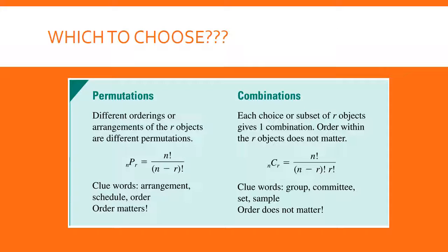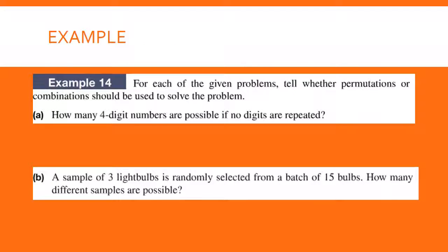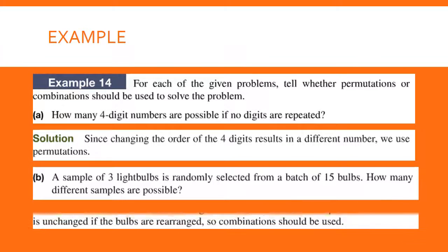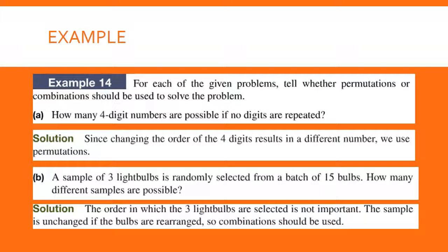Now we'll try some examples where they're mixed up — you need to figure out whether to use a permutation or a combination. How many four-digit numbers are possible if no digits are repeated? Order is important here because the number 1234 is different from 4321, so you would use permutations. For part B, you don't care in what order you select three light bulbs — you just need three light bulbs — so it's going to be a combination.